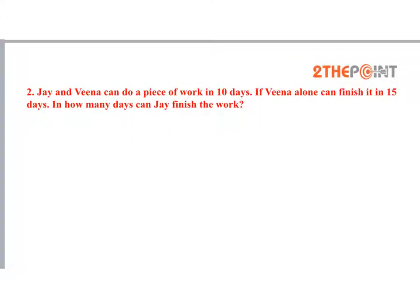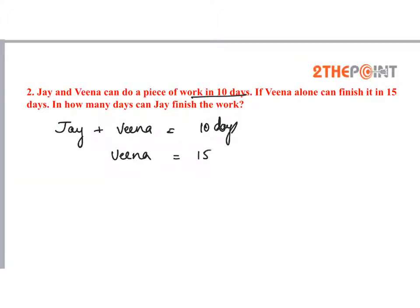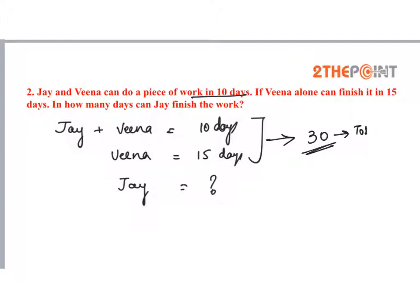Jay and Veena can do a piece of work in 10 days. If Veena alone can finish it in 15 days, in how many days can Jay alone finish the work? The given data: Jay and Veena working together complete the work in 10 days, and when Veena works alone she finishes the work in 15 days. Now find the total work — take the LCM of 10 and 15, which is 30. So 30 units is the total work.